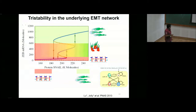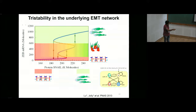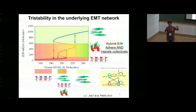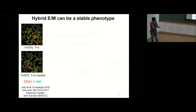Another feature visible in this bifurcation diagram is the existence of monostable regions. In some parameter regimes the only available phenotype is epithelial; in others, only mesenchymal; but there are also regions in which more than one phenotype is available simultaneously, meaning that a genetically identical population can still display different phenotypes. So mutation is not necessarily the only way to think about metastasis. But is there any experimental proof for all of this?